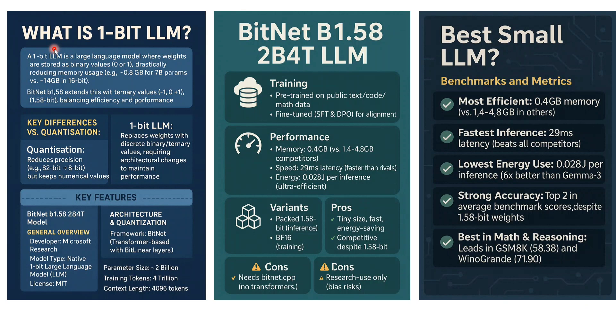What is the difference between 1-bit LLMs and quantization? In quantization, you are reducing the precision — for example, converting a 32-bit floating point down to 8-bit. In the case of a 1-bit LLM, you are not starting from 32-bit and reducing; you are directly making weights zero or one.